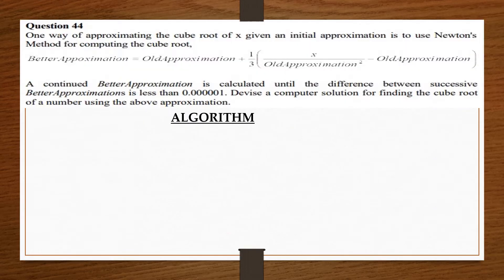One way of approximating the cube root of x given an initial approximation is to use Newton's method for computing the cube root with this formula. A continued better approximation is calculated until the difference between successive better approximations is less than 1 in a million.